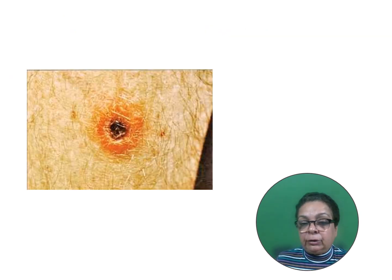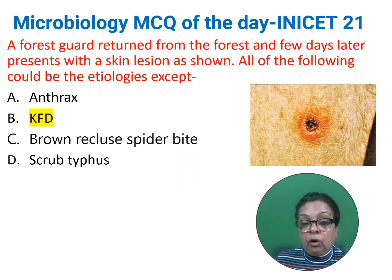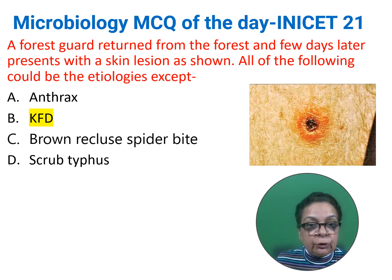This skin lesion with a central necrotic tissue, which is called an eschar, can be seen in all except Kaisinur forest disease.